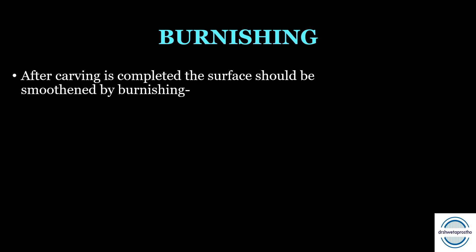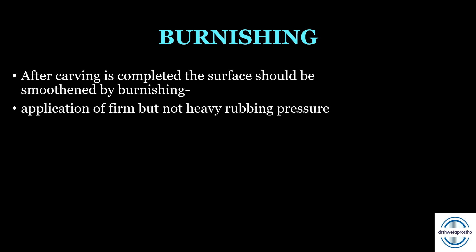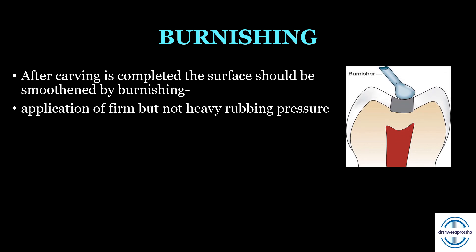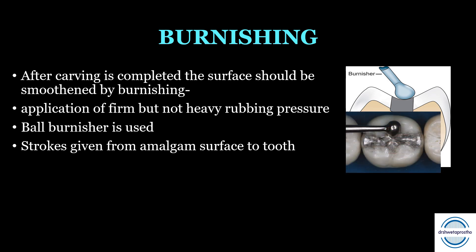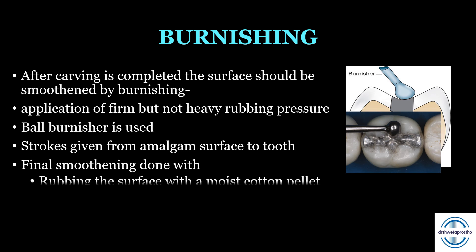After carving, burnishing is done to smoothen the surface. Firm but not heavy rubbing pressure is applied using a ball burnisher. Burnishing strokes should be given from the amalgam surface to the tooth — another important viva question. Final smoothening should be done by rubbing the surface with a moist cotton pellet.